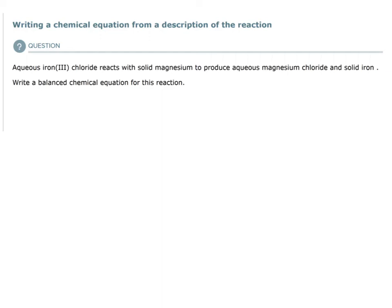In this topic, we are writing a chemical equation from a description of the reaction. They give us a written description: aqueous iron(III) chloride reacts with solid magnesium to produce aqueous magnesium chloride and solid iron. Write a balanced chemical equation for this reaction.